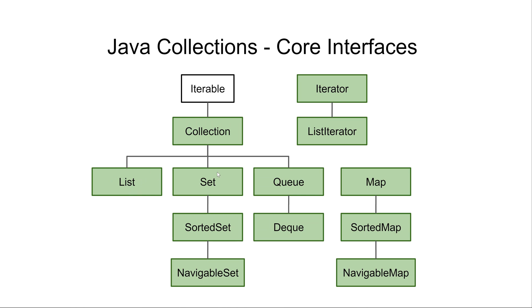The Set interface, on the other hand, represents a unique collection of elements, which means that each element can only be present in the set once. Additionally, the Set does not guarantee the order of the elements stored internally, so if you iterate them you don't know what the order is going to be. For that purpose we have the SortedSet, which provides some sort of sorting of the elements internally, and once they are sorted you can also iterate them in that order.